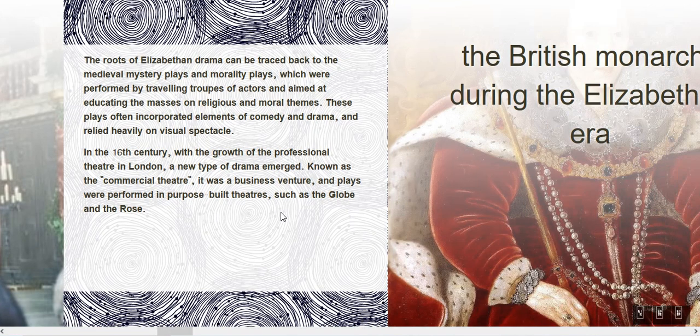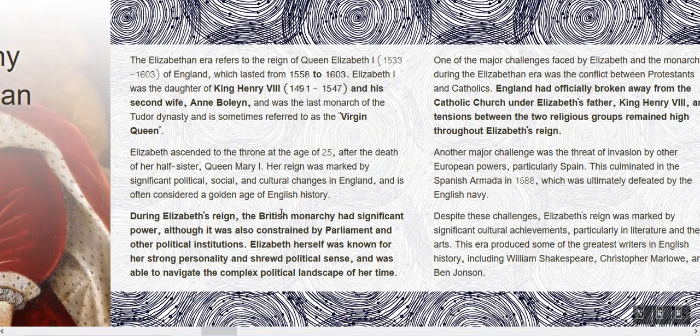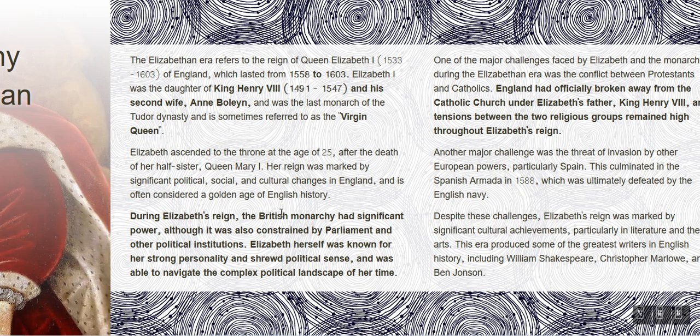The British Monarchy during the Elizabethan Era. The Elizabethan era refers to the reign of Queen Elizabeth the First, who lived from 1533 to 1603 and reigned from 1558 to 1603. Elizabeth the First was the daughter of King Henry the Eighth, 1491 to 1547, and his second wife Anne Boleyn, and was the last monarch of the Tudor dynasty, sometimes referred to as the Virgin Queen.